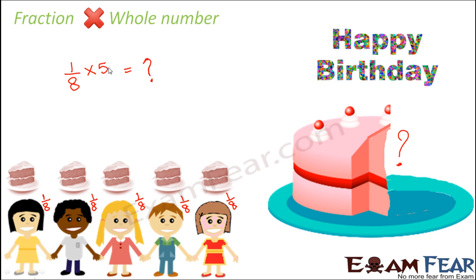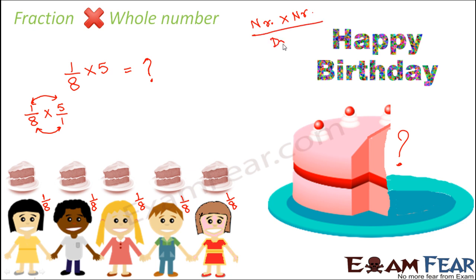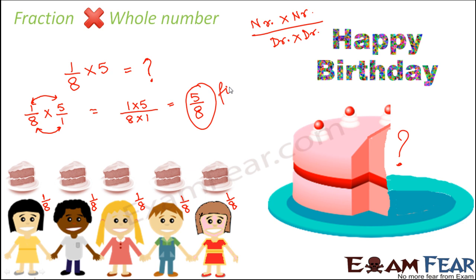How do we do this multiplication? When we say 1/8 multiplied by 5, we basically mean 1/8 multiplied by 5/1. The simple rule to follow when multiplying fractions is: multiply numerator with numerator, and multiply denominator with denominator. So numerators are 1 and 5, giving 1 × 5 = 5. Denominators are 8 and 1, giving 8 × 1 = 8. So the result is 5/8 — meaning 5/8 of the cake was eaten by your 5 friends.